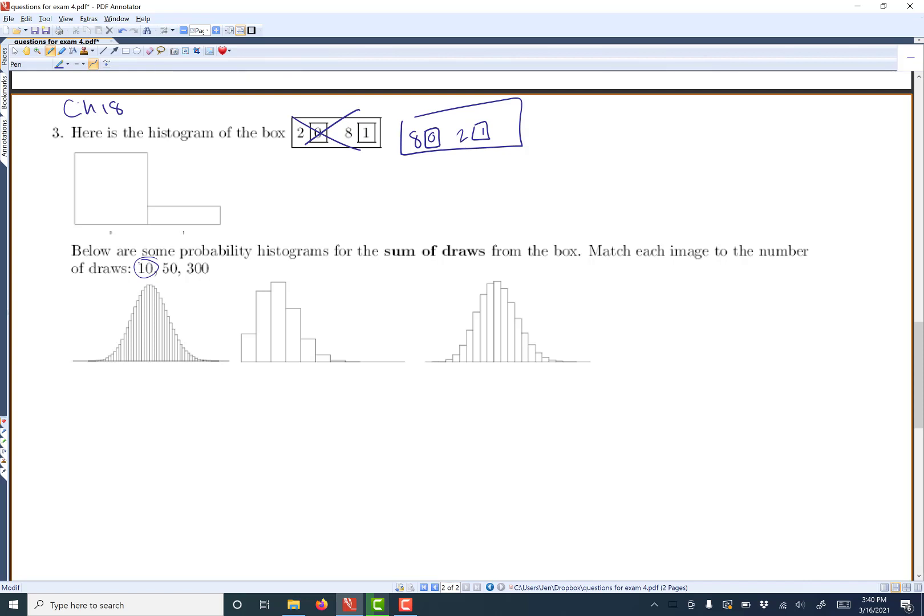And so when you start off, this histogram looks kind of lopsided. And so for small numbers of trials, it will be still lopsided. But when you get a bigger number of trials, it looks normal.